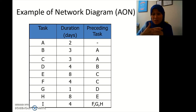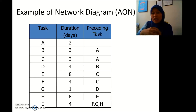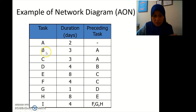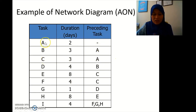We're going to have a Gantt chart, and from this information we have all the tasks here — A until I — with durations given in days and the preceding tasks. For example, after A we have B, and after A we also have C. You have to translate all this information into bubbles and arrows.